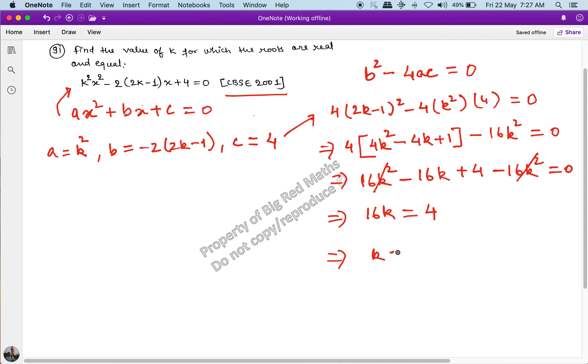This implies k = 4/16 or k = 1/4. So the answer to the question—find the value of k for which the roots are real and equal—is k = 1/4.